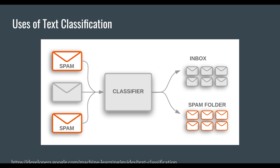So what is a use case of text classification? Believe it or not, every single person watching this video is familiar with text classification — you use it every day in the form of spam detection. In the world of machine learning, spam detection is a problem that has been solved, thanks to two decades of computer scientists working on it. Spam detection is a binary classification text classifying model — it looks at an email and determines whether it is spam or not spam.